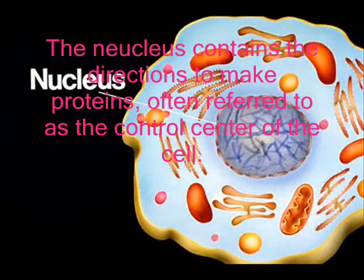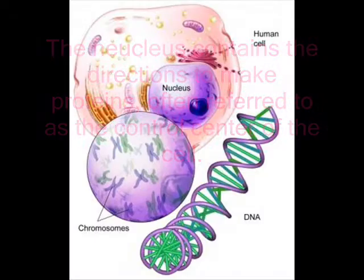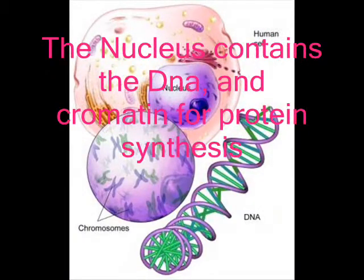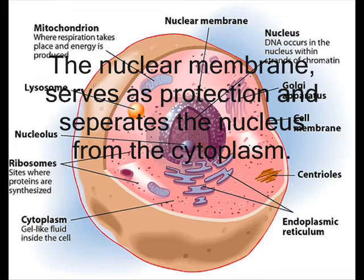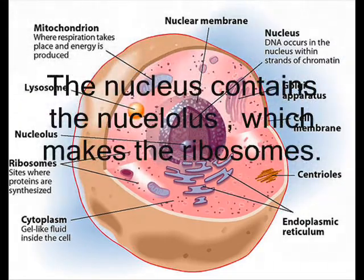The nucleus contains the directions to make proteins, often referred to as the control center of the cell. The nucleus contains the DNA and chromatin for protein synthesis. The nuclear membrane serves as protection and separates the nucleus from the cytoplasm. The nucleus also contains the nucleolus, which makes the ribosomes.